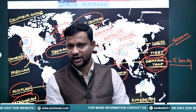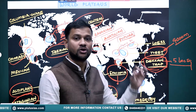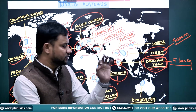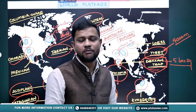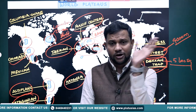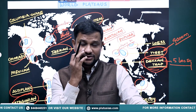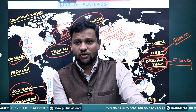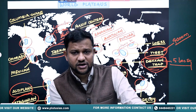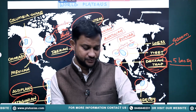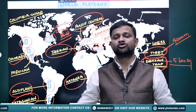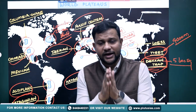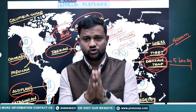The Deccan Trap's overall area is about 5 lakh square km; its extension used to be 10 lakhs earlier. Now in Australia, the Kimberley Plateau lies in the northwestern part of Australia and is equally famous for its various mineral resources. So these are the overall distributions of the world's plateaus.